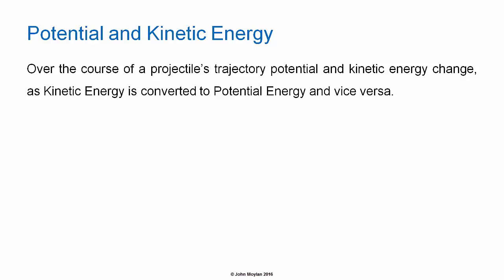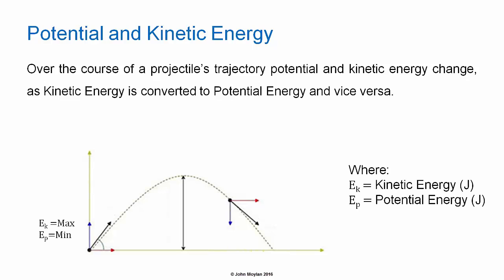Over the course of a projectile's trajectory, the potential and kinetic energy change, as kinetic energy is converted to potential energy, and potential energy is converted to kinetic energy. In this diagram, you can see the trajectory of a projectile. E subscript K is the kinetic energy in joules, and E subscript P is the potential energy in joules.